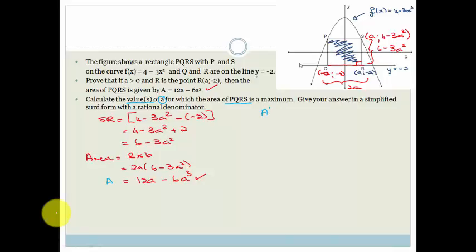So let's have a look at that. So we've got A dashed is going to be 12 minus 6 times 3 is 18, 18A squared. So that is 12 minus 18A squared. And that is the first derivative. So what do we want to do now? We want to find the maximum or the minimum. So what are we going to do? We're going to let it equal 0.